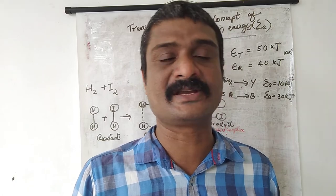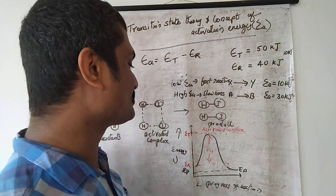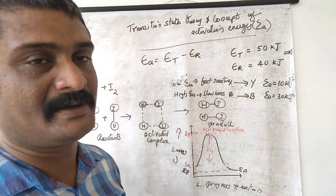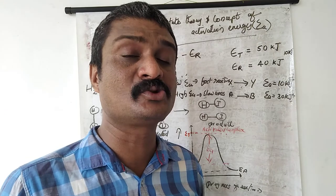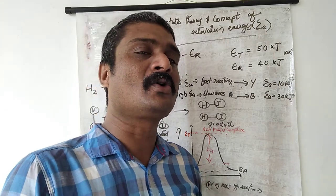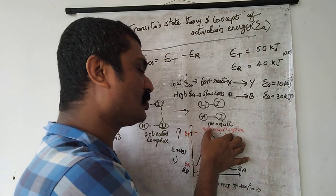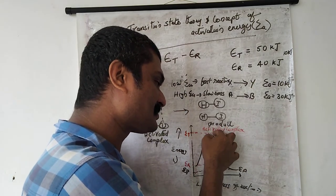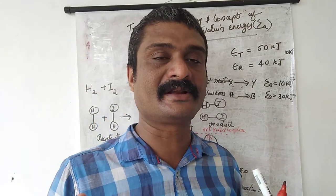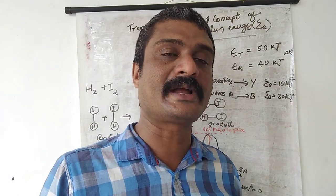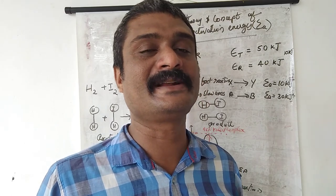We can now see how temperature influences the reaction rate on the basis of transition state theory. When temperature increases, more and more molecules acquire activation energy and are converted to the activated complex. The activated complex then decomposes to form the product. Therefore, when temperature increases, the number of molecules acquiring activation energy increases, and the reaction rate also increases.